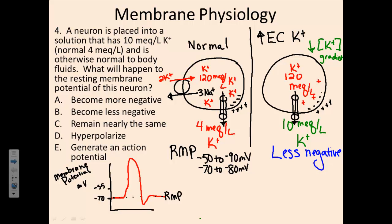Because we've decreased the concentration gradient for potassium through the leak channels, we're going to see a less negative resting membrane potential even at rest. Looking back at the problem, this indicates that response B is the correct answer — because we have more potassium ions held inside the cell, the resting membrane potential is raised. On our action potential diagram, sitting at negative 70, we would be raised up slightly from that.